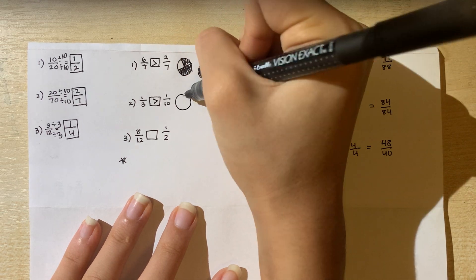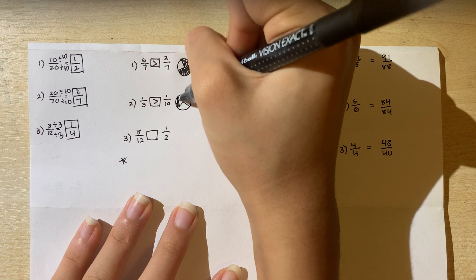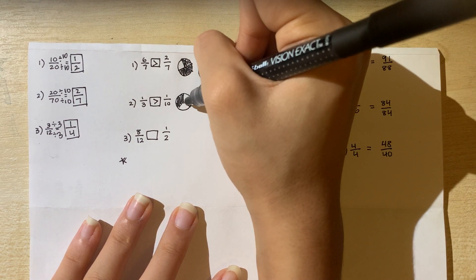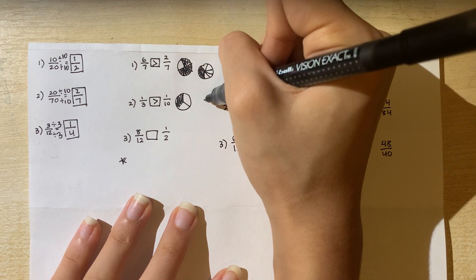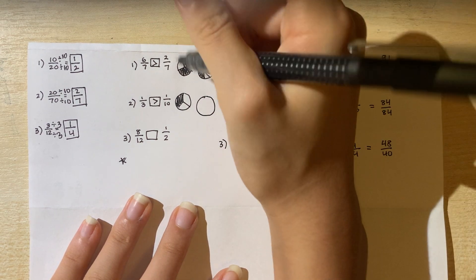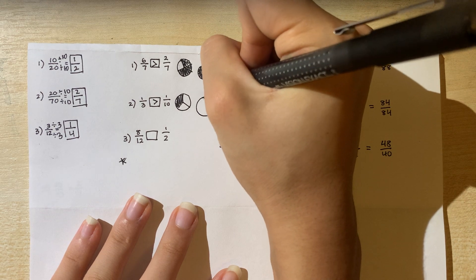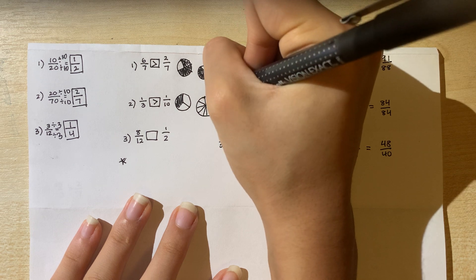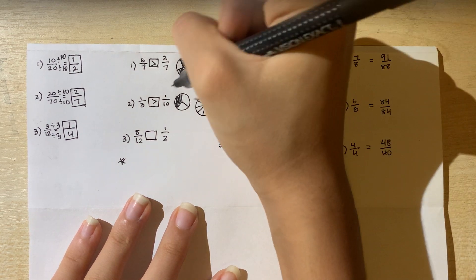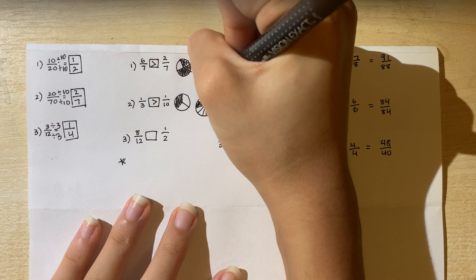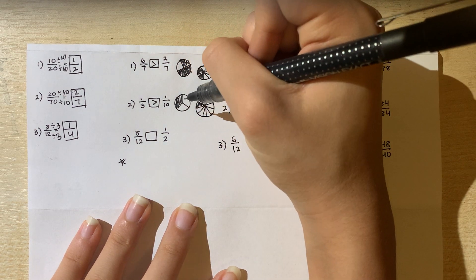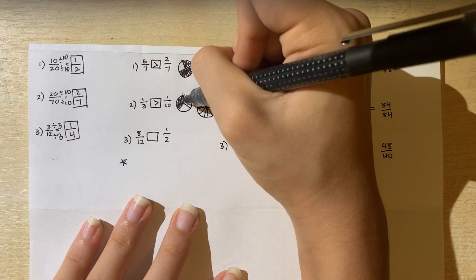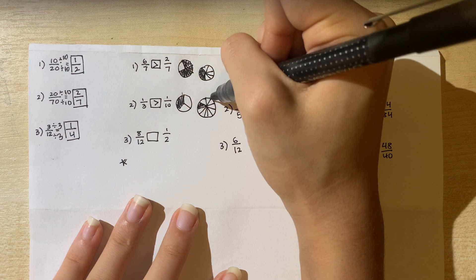Drawing a pie chart, 1 third fills one of three slices, which is a pretty big portion of the pizza. If we split another circle into 10 and fill in only one slice, you can see that this pizza slice is so much bigger than the 1 tenth slice. This proves that 1 third is greater than 1 tenth.